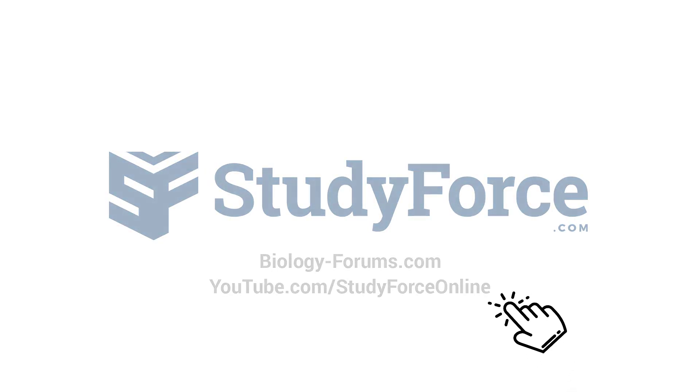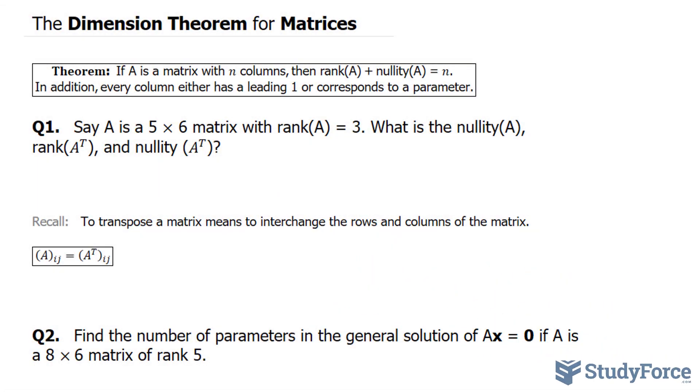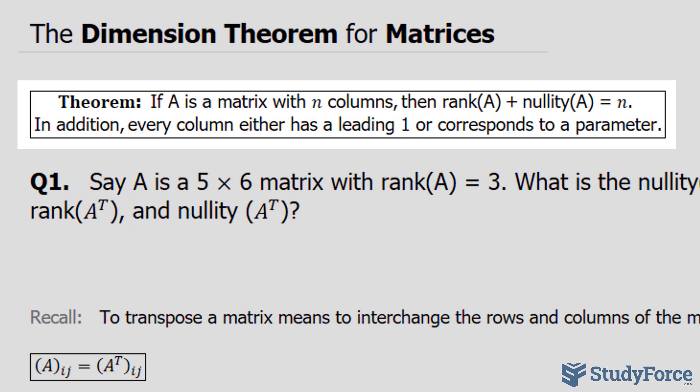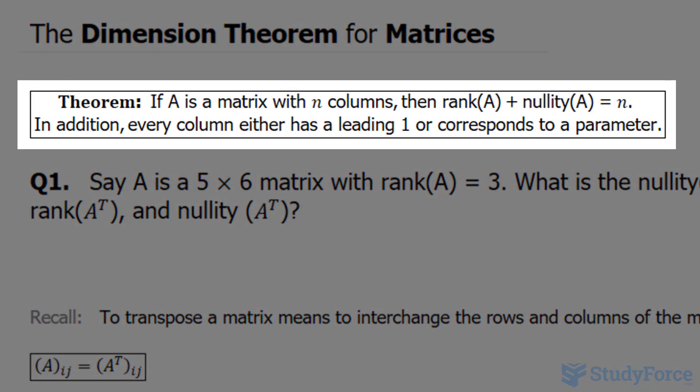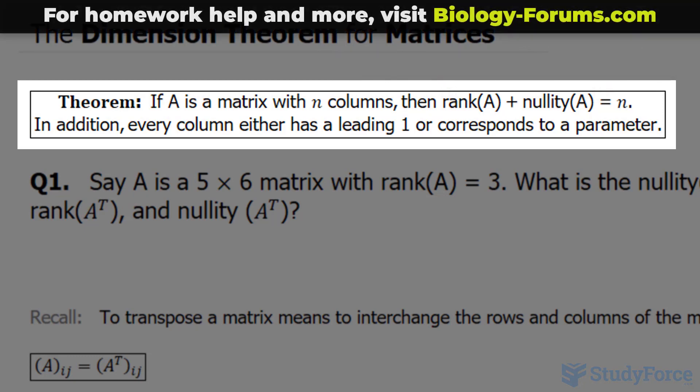In this lesson, we'll discuss how the dimension theorem applies to matrices. The theorem states that if we have a matrix A with n columns, then the rank of A plus the nullity of A is equal to n. In addition, every column either has a leading 1 or corresponds to a parameter.